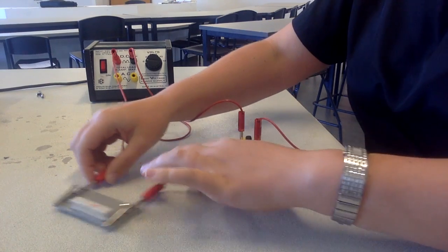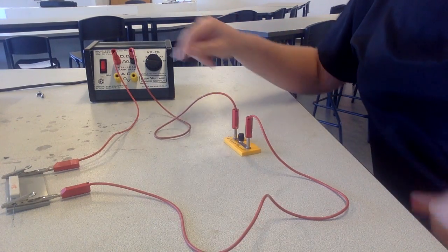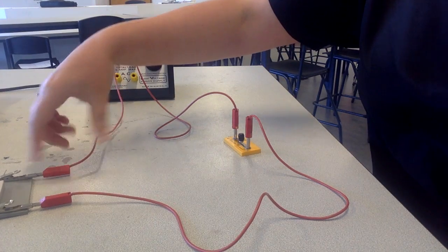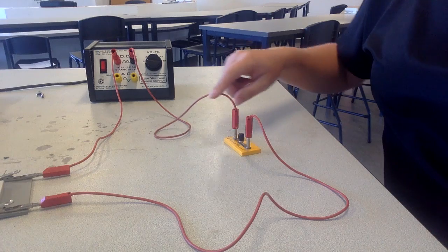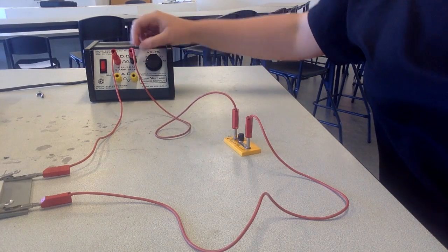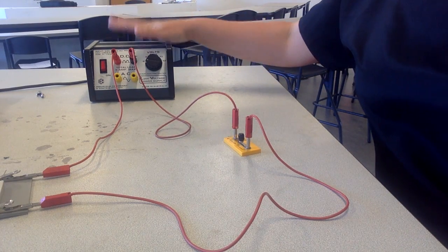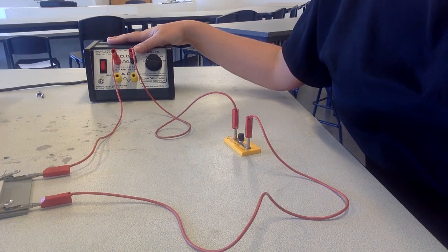So once you've set up your very simple circuit, a loop going from here into the resistor then from the resistor to the switch back to the power supply, we need to add in our measuring devices.